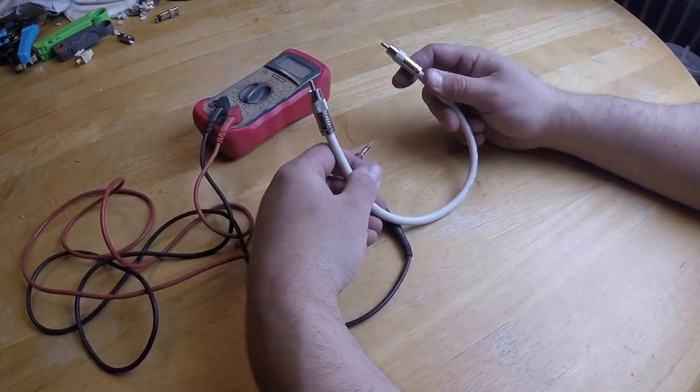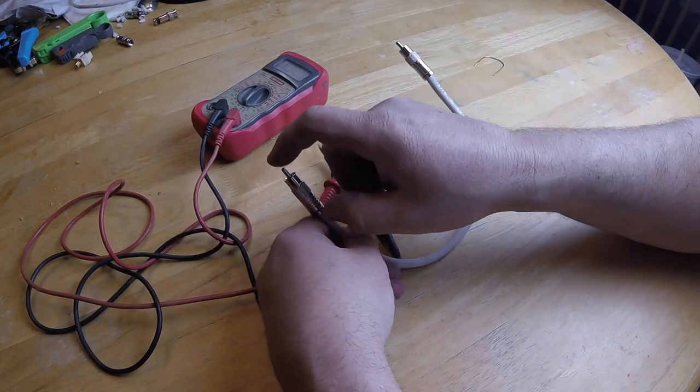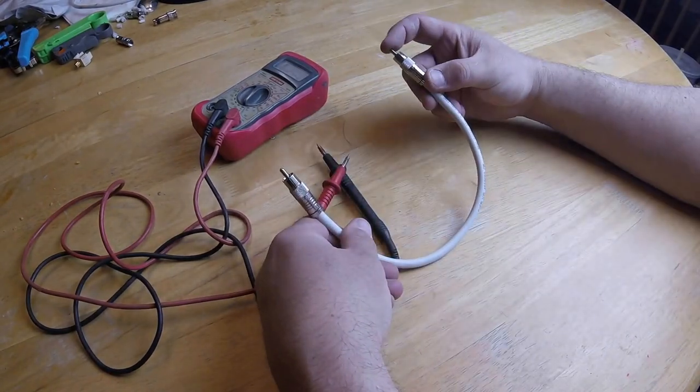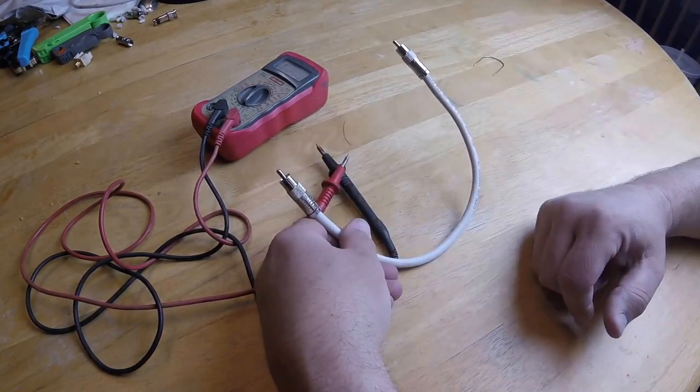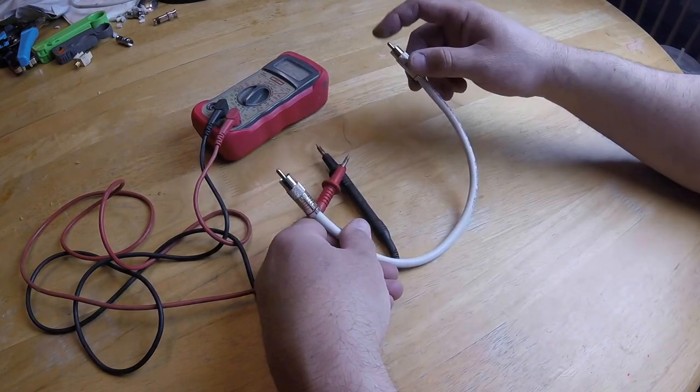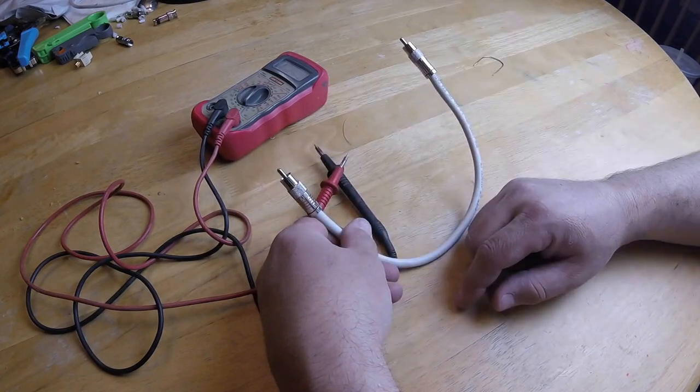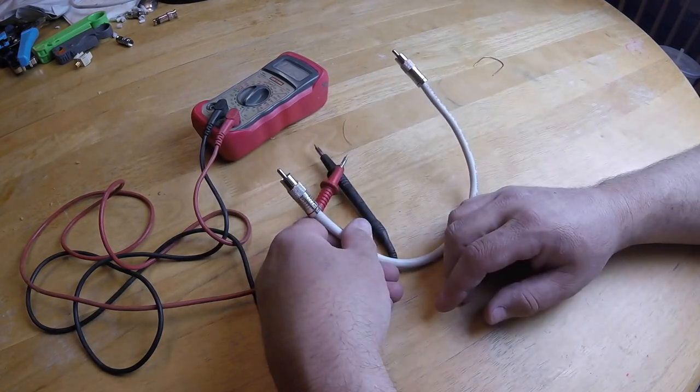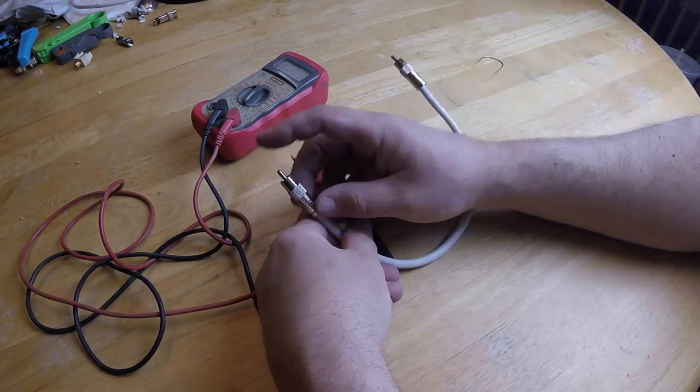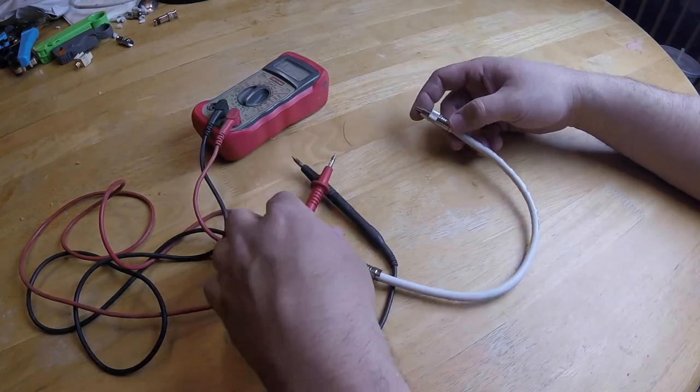So on this wire, the first thing I want to know is does this tip right here reach this tip over here? Maybe this wire is 200 feet long. I need to know if that tip touches this tip, and I know you're wondering, how in the world if it's 200 feet long are you gonna check both ends at the same time? We'll get into that, but for now I want to know if that tip reaches that tip.